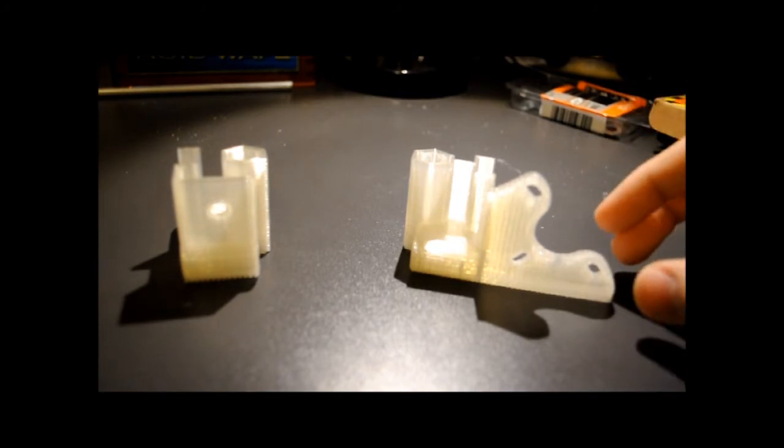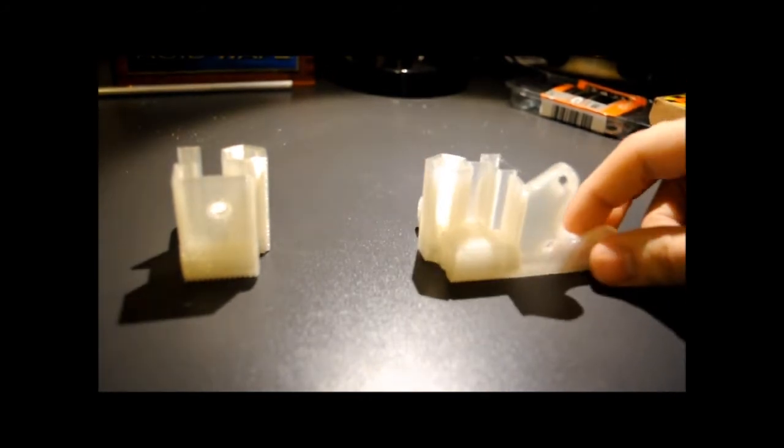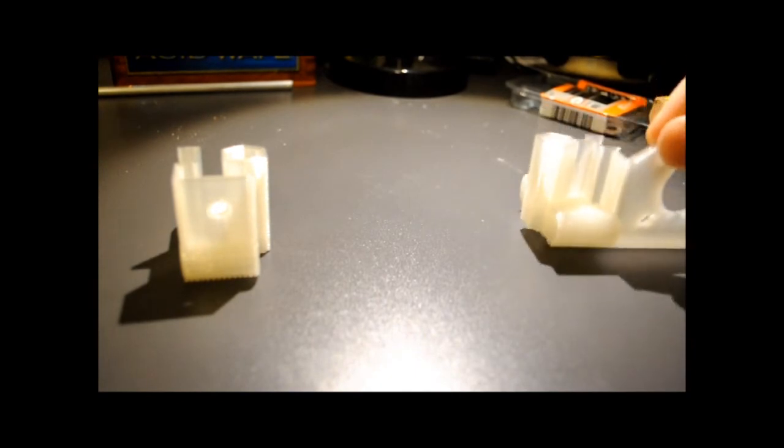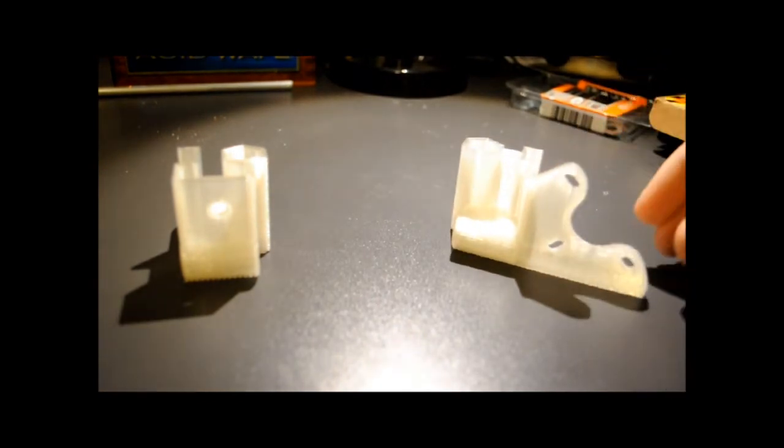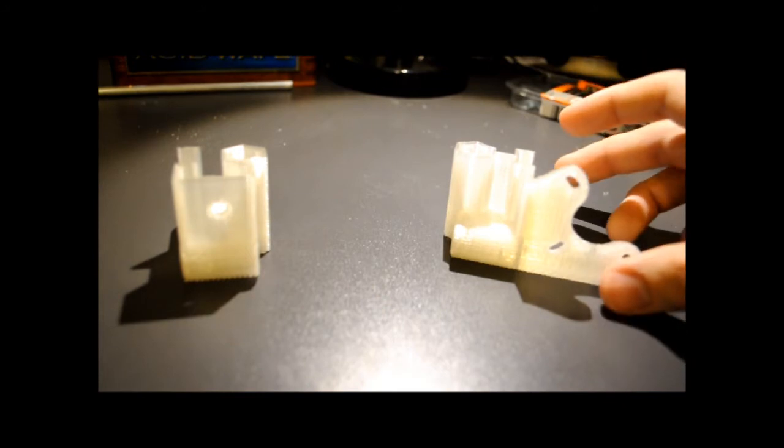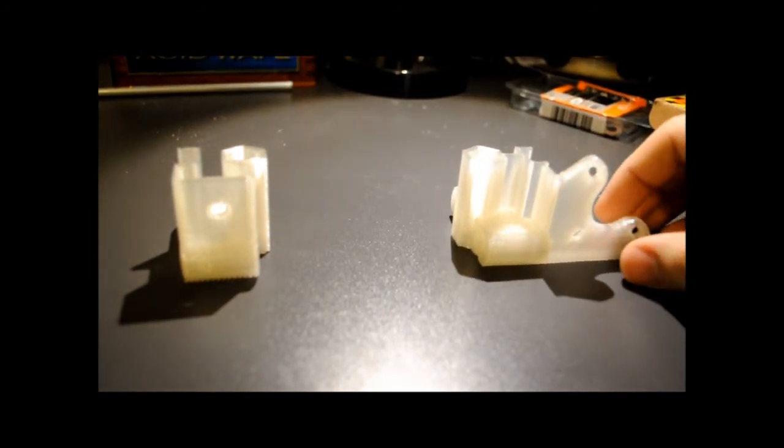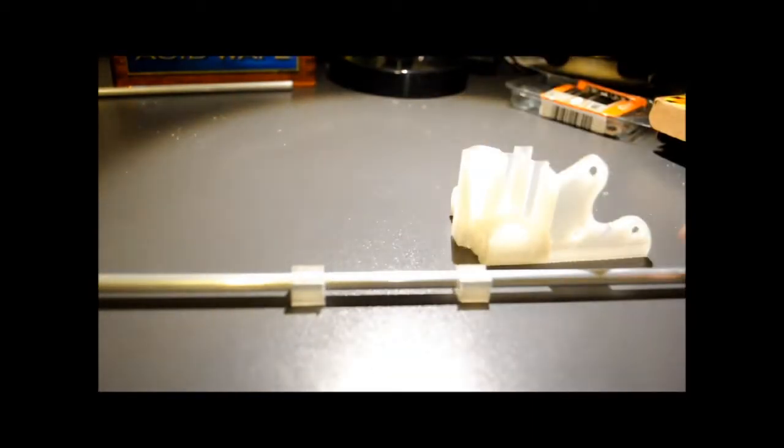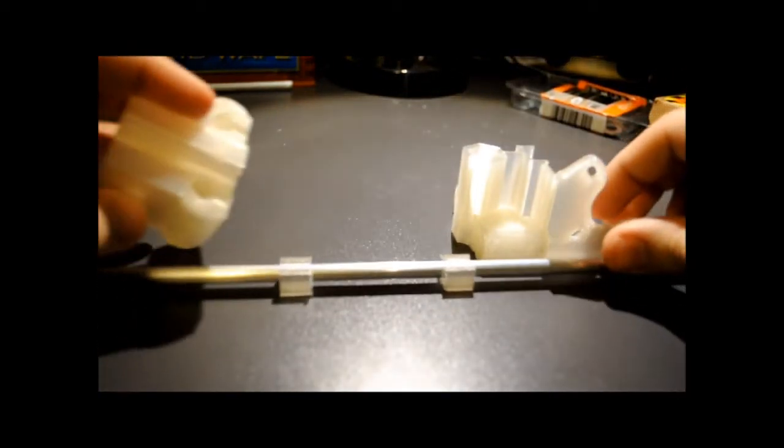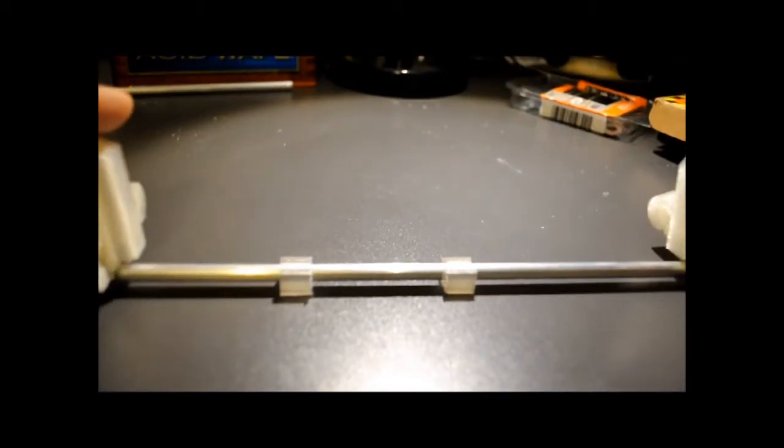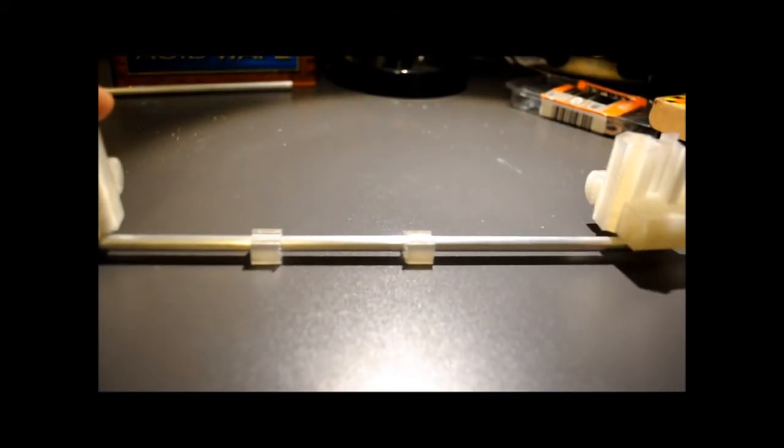For me to start building the Z-axis, I need to build the X-axis, which basically is this piece here that holds the motor. It's the NEMA 17 or 14. It's held together by the smooth rods. There's two holes in each piece for each of the two rods.